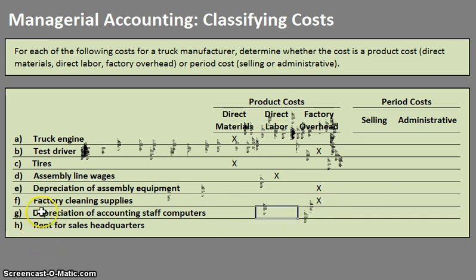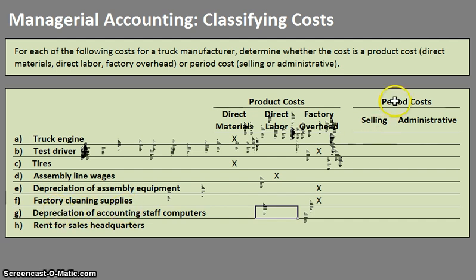Now here we have another depreciation item, but this is for the accounting staff computers. Does this have to do with the actual factory? No — this is an administrative matter. So this would be a period cost, and since it doesn't have to do with selling, it is an administrative period cost.